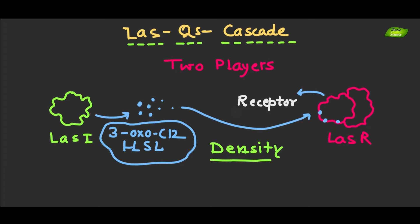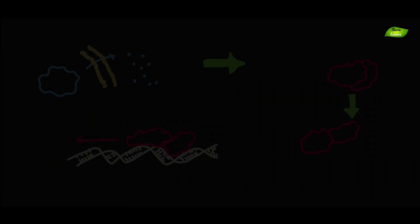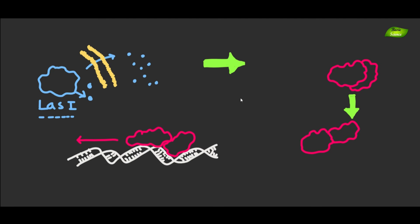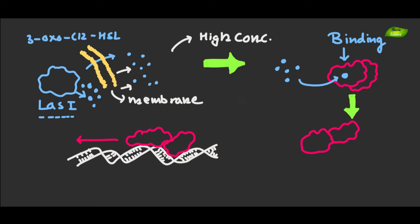LasI protein synthesizes 3-oxo-C12-HSL, which diffuses through the bacterial membrane. As the concentration of this molecule rises, it binds to LasR receptor, further changing the confirmation of the complex and activating its role as a transcriptional activator.